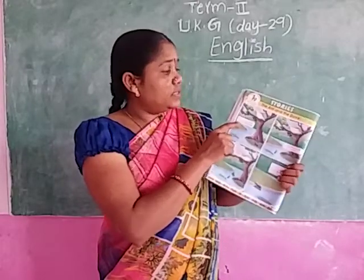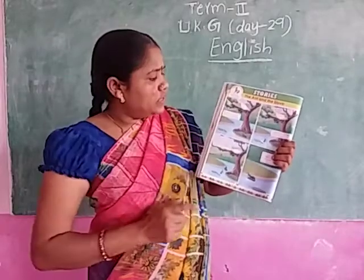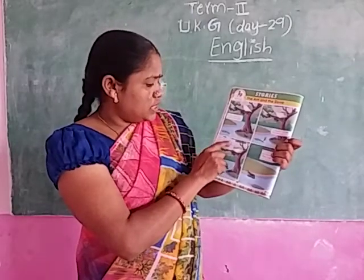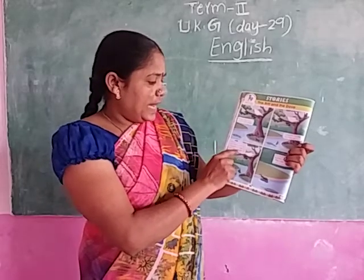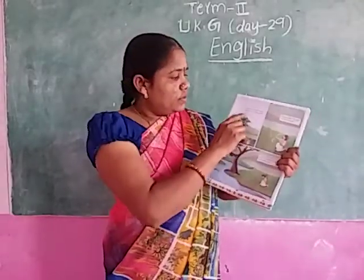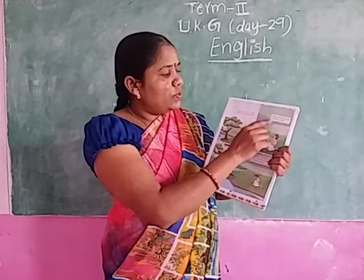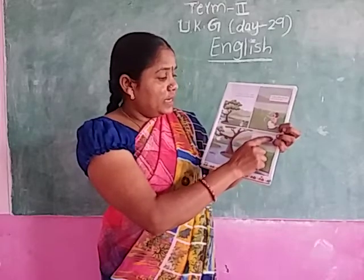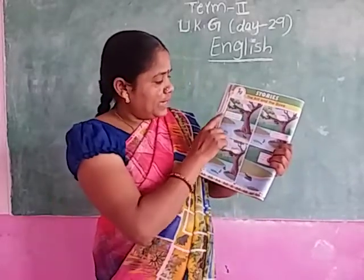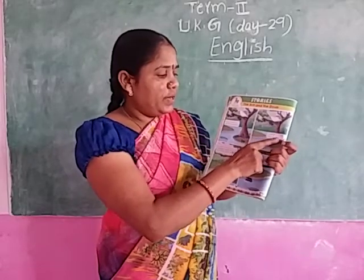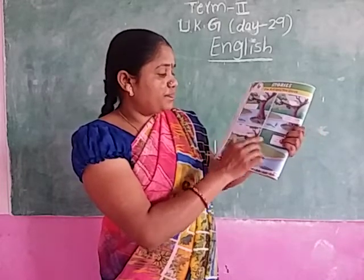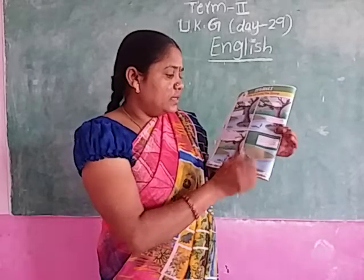Story: The Ant and the Dove. An ant went to a river to drink water. It slipped and fell into the river. Seeing this, a dove plucked a leaf and dropped it near the ant. The ant got on to the leaf. The leaf was carried by the river to the other side. The ant was saved.